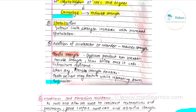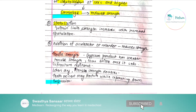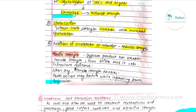Spatulation within limits increases strength with increasing spatulation. However, addition of accelerators or retarders — whether it is an accelerator or a retarder — reduces strength.